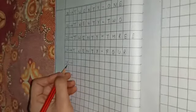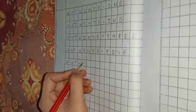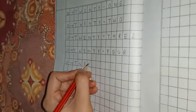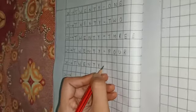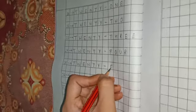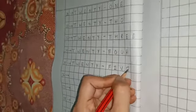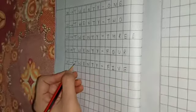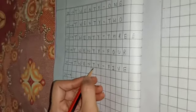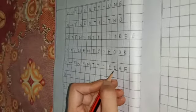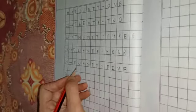Next is 25. T-W-E-N-T-Y, that's 20. F-I-V-E, that's 5. Twenty-five, 25.